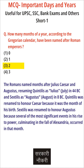2. The Romans named months after Julius Caesar and Augustus, renaming Quintilis as Julius (July) in 44 BC and Sextilis as Augustus (August) in 8 BC. Quintilis was renamed to honor Caesar because it was the month of his birth. Sextilis was renamed to honor Augustus because several of the most significant events in his rise to power occurred in that month.